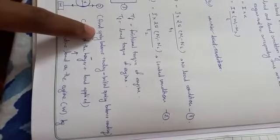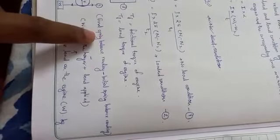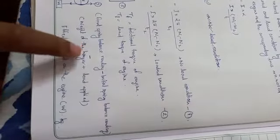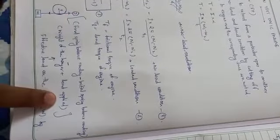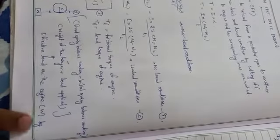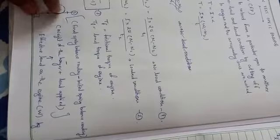If there is any initial error in the spring balance, you must subtract it. The effective load is calculated as: final spring balance reading minus initial spring balance reading, minus the weight of the hanger plus load applied. This effective load multiplied by g and by the brake drum radius r gives the load torque.